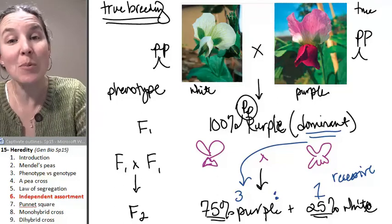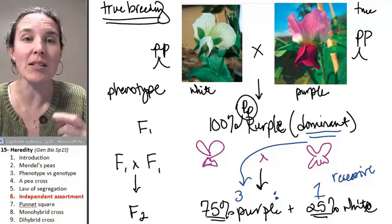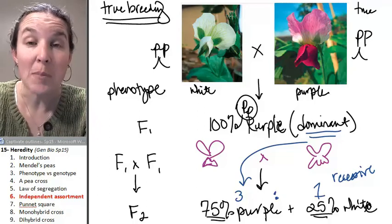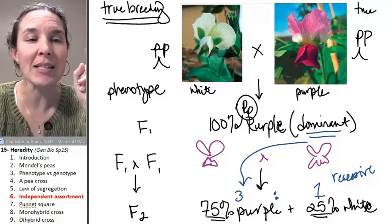We can explain the law of segregation because we understand meiosis. We can explain the law of independent assortment because we understand meiosis.